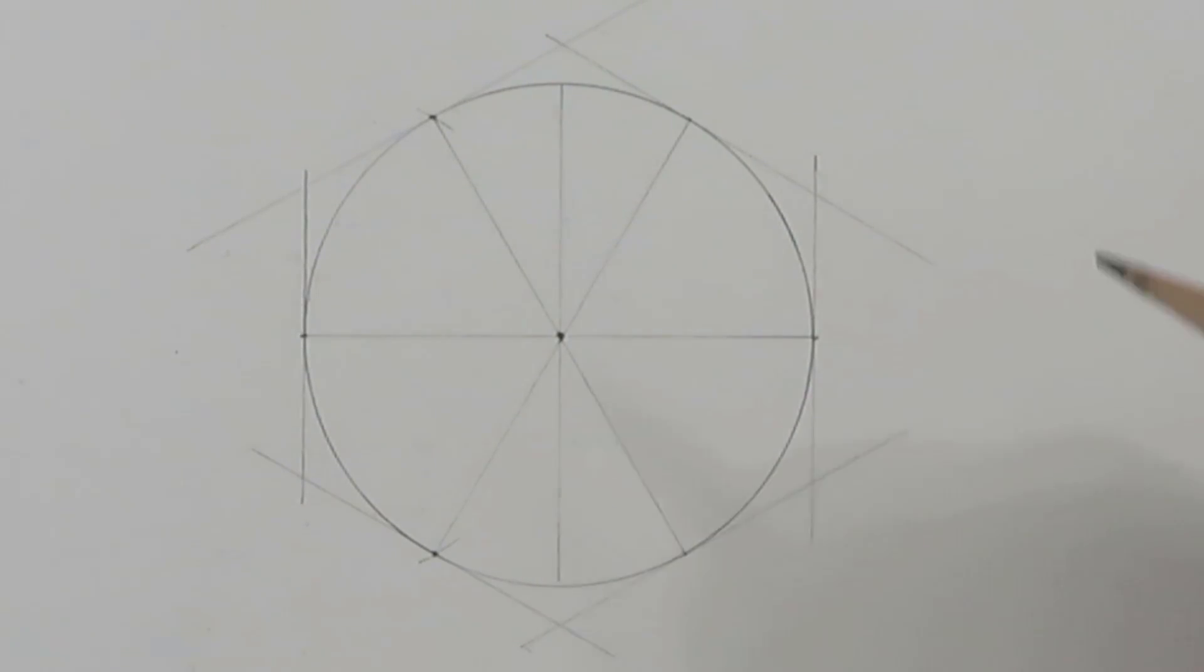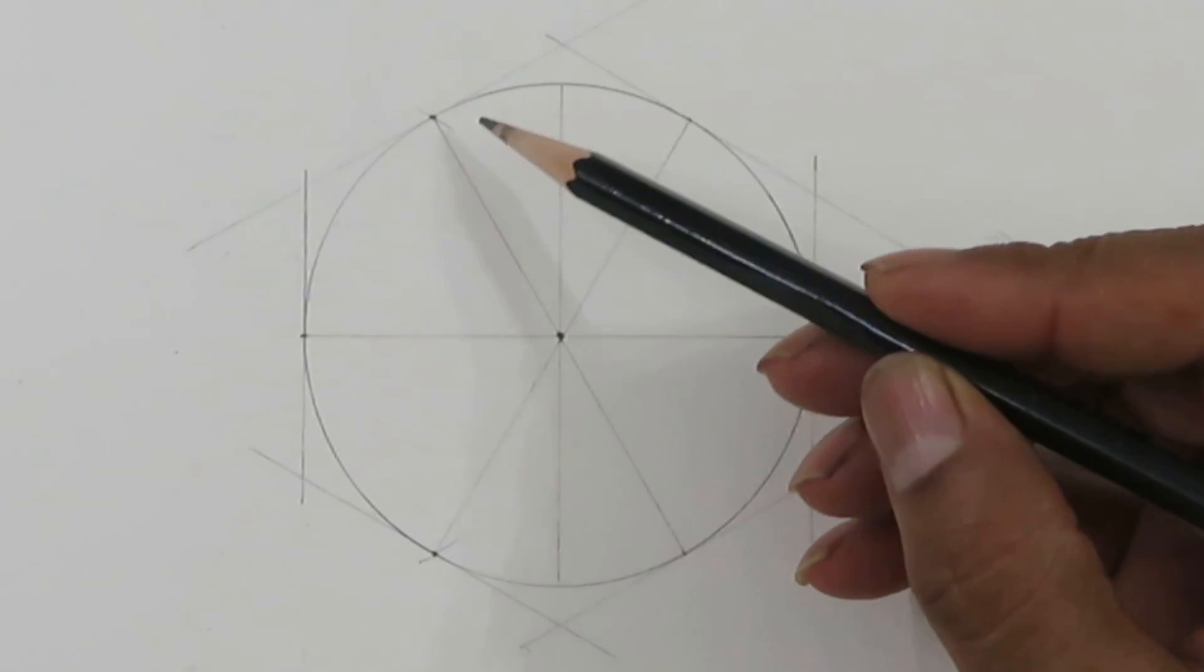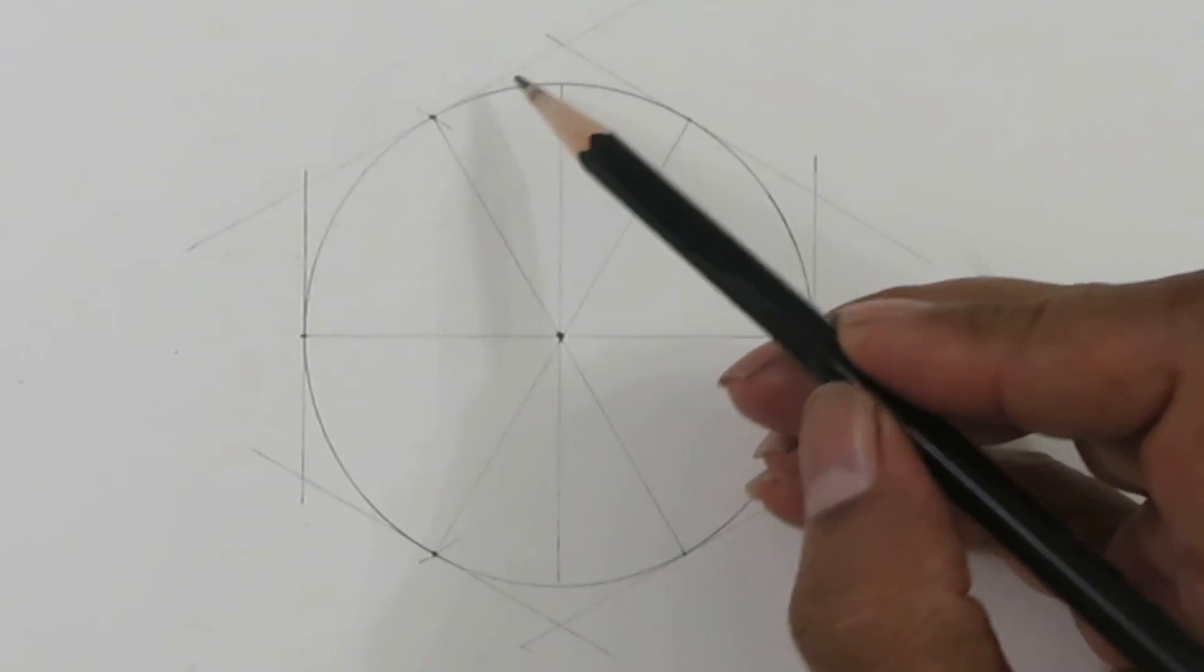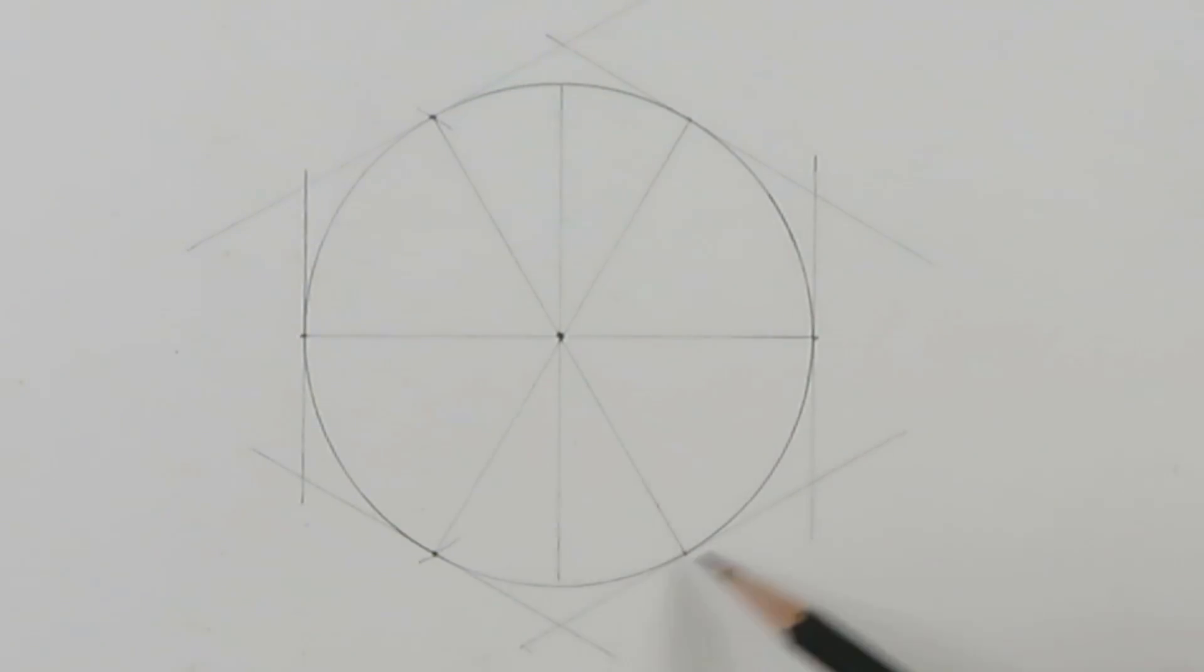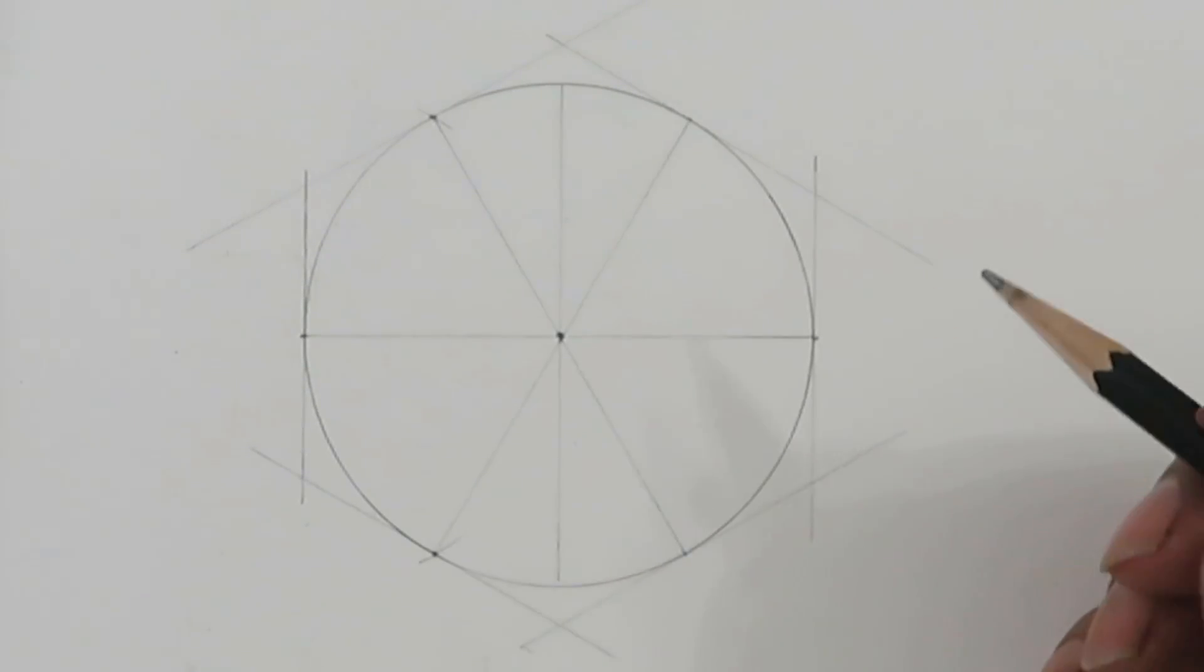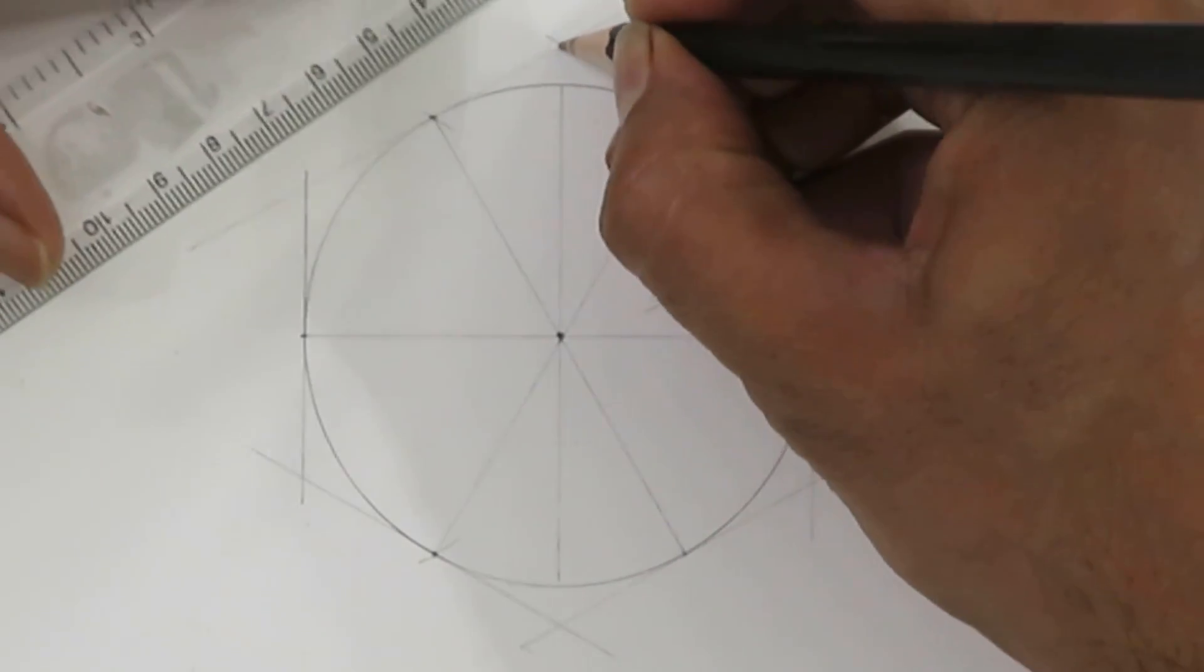Now actually we have made the hexagon that is circumscribed on this circle. You can see the hexagon here: one, two, three, four, five, and six. So now we can draw thicker line here.